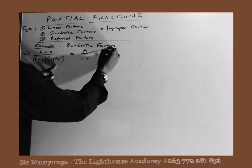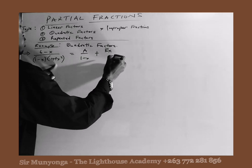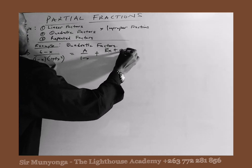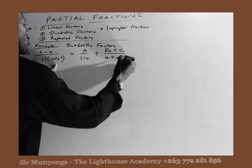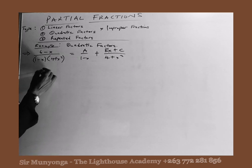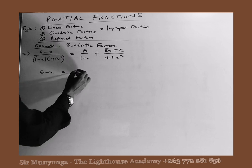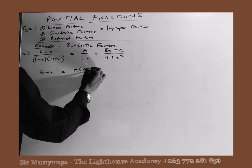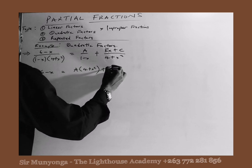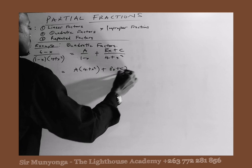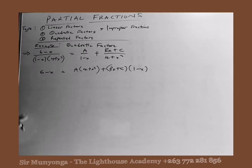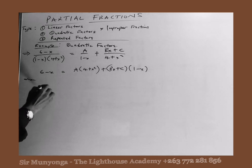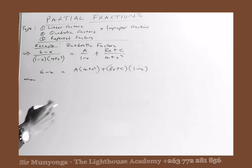So a general linear factor would be Bx plus C over the quadratic factor. We then set up: 6 minus x equals A times the quadratic factor plus (Bx plus C) times the linear factor. To find the values of the constants A, B, and C, we substitute strategic values of x.